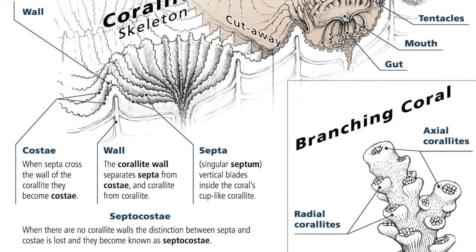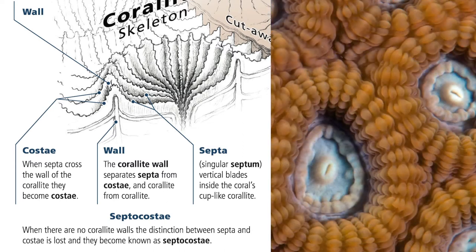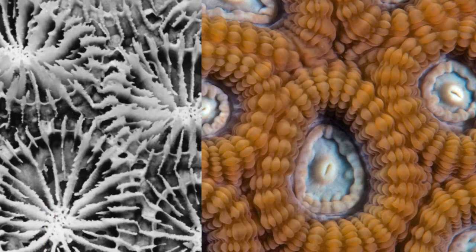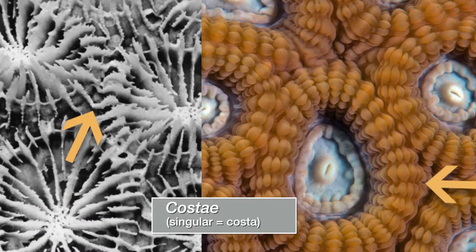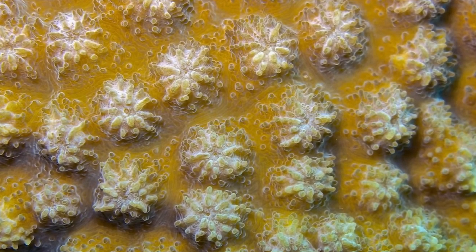Now we move on to the final group of terms you need to use the coral finder to its full power: septa, costi and septocosti. These new terms describe the many parallel ridges of skeleton that arise from the centre of each coralite, and which can often be seen through the tissue of the polyp. The name used for these ridges of skeleton is defined by the relationship of these structures to the coralite wall. The parallel ridges found within the wall are known as septa. When they cross over the wall, they are known as costi. Septa and costi often carry spines and bumps, collectively known as ornament.